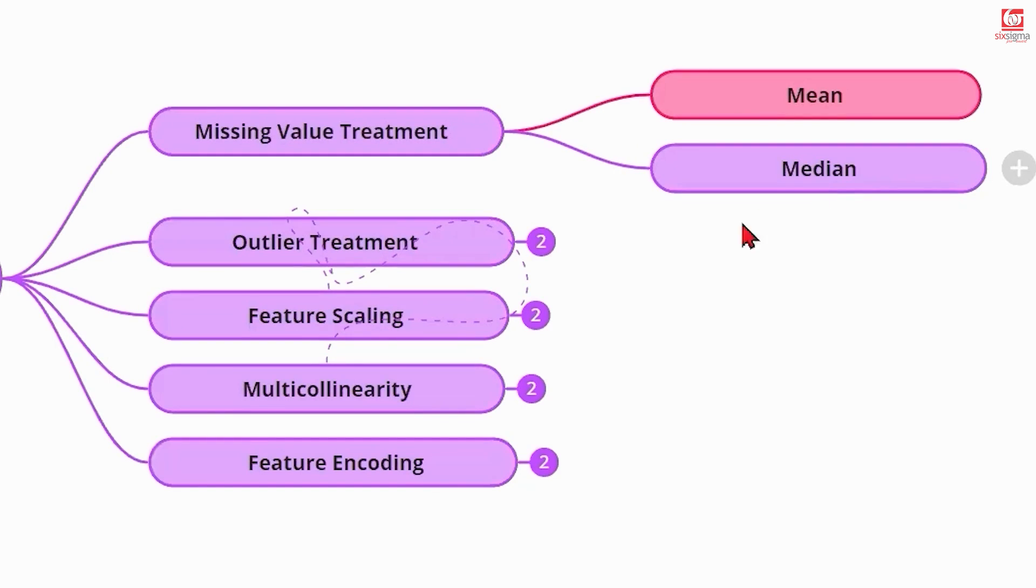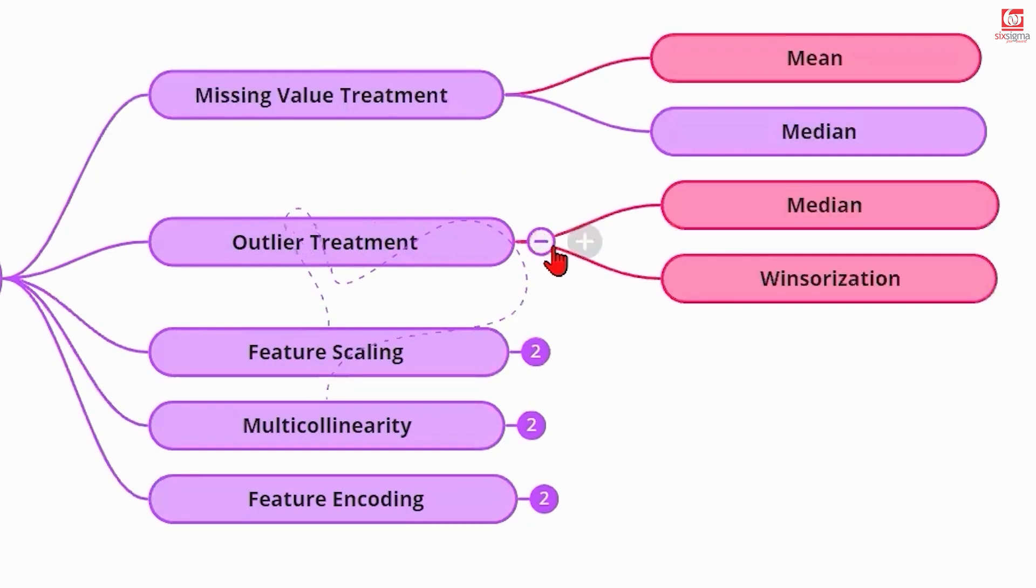So once you're done with the missing value treatment, you can go to the next stage, which talks about the outlier treatment. Now what are the outliers? Outliers are the extreme values in the data, which are very different from the normal values. And that's why you want to treat them. One common approach is to treat the outliers with the median. And the second approach is to perform winsorization, which is called a capping or flooring exercise. Essentially, if you have values above the upper limit in a box plot, you bring them to the upper limit. If you have values below the lower limit in a box plot, you bring them to the lower limit. These are two common approaches for outlier treatment.